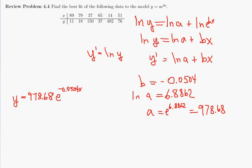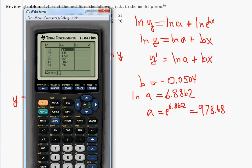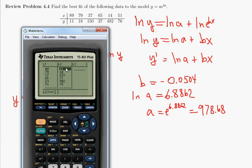Let me talk about how to do this on the calculator. So ahead of time, I have edited the list. So I have the same x and y coordinates, 89, 11, 79, 18, 37, 150, and so on. So the first step was to get the natural logs of all the y coordinates. So that means in list L3, I want this to be equal to the natural log of the y coordinates, which were in list L2, and so this generates the y coordinates.